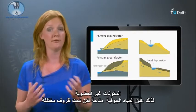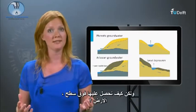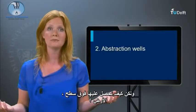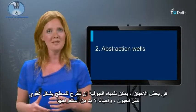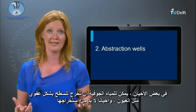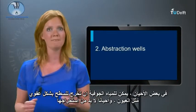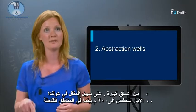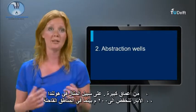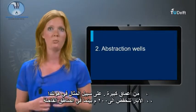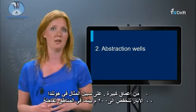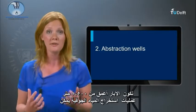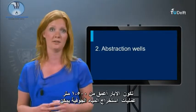Groundwater is available under different circumstances. But how do we get it above ground? Sometimes groundwater can surface spontaneously as a spring, and sometimes it has to be abstracted from great depths. For example, in the Netherlands wells go down 200 meters, while in arid regions wells are found deeper than 1,500 meters.